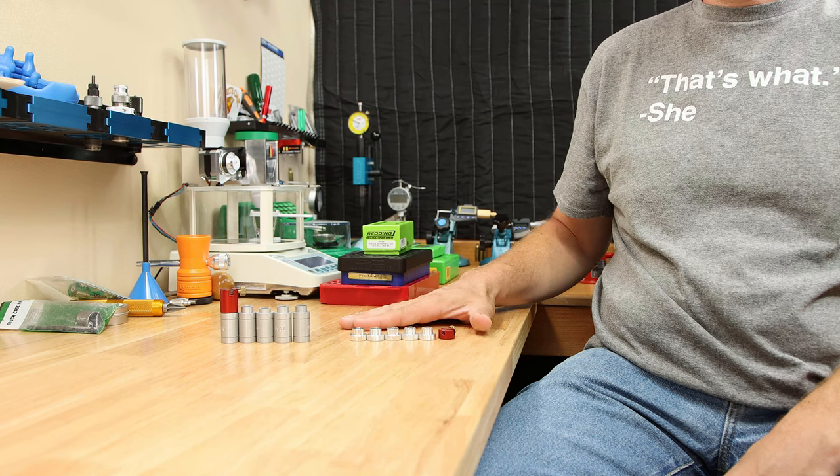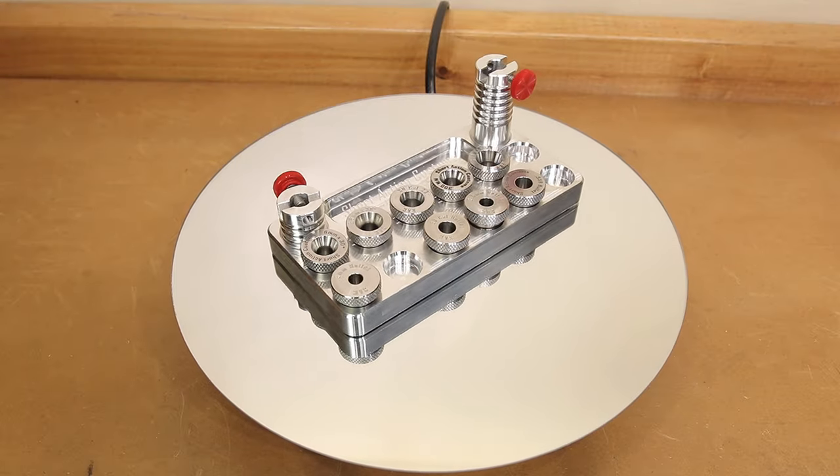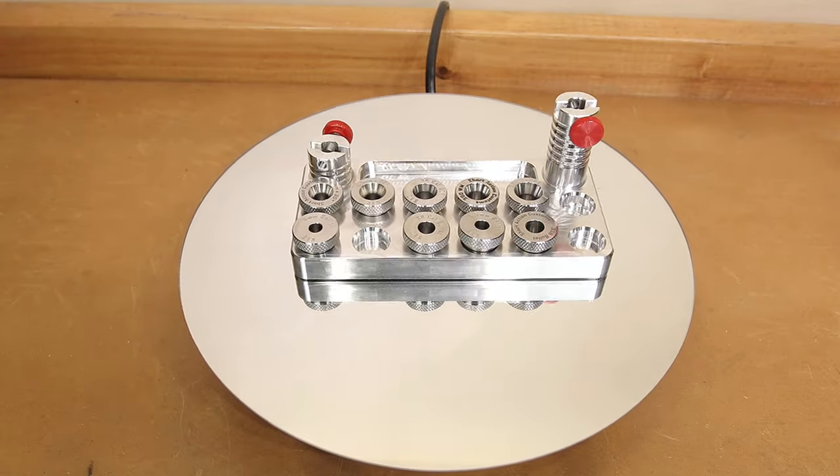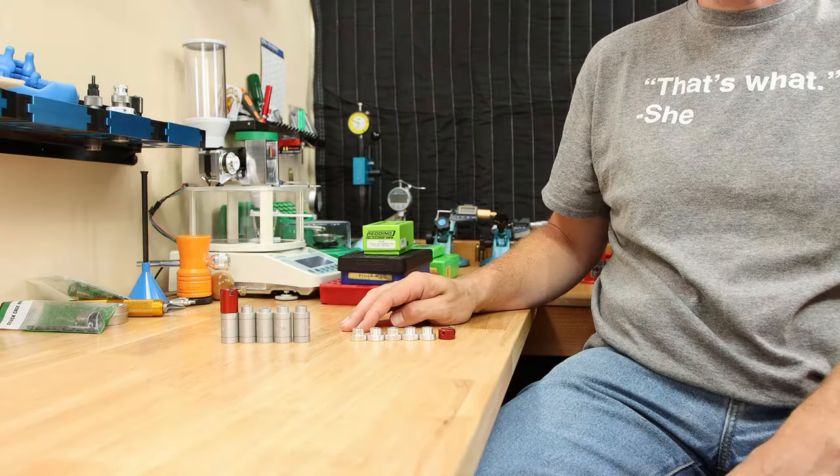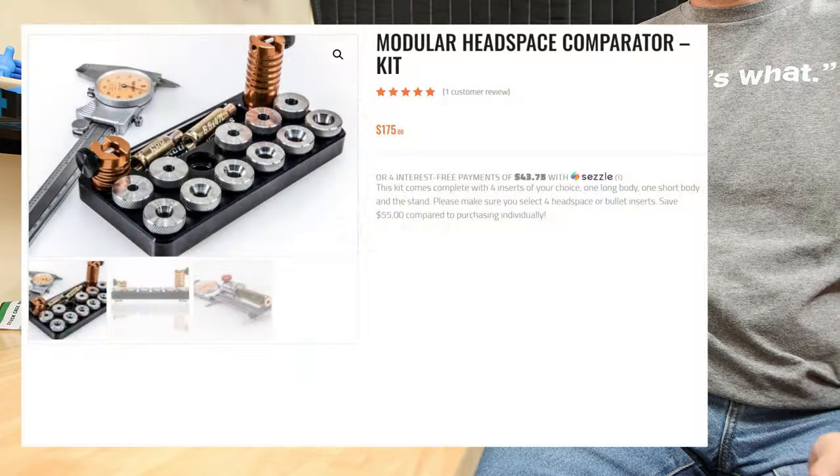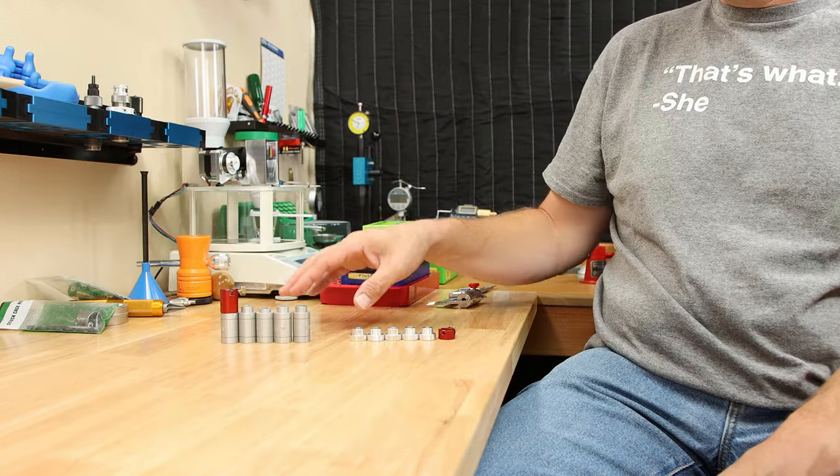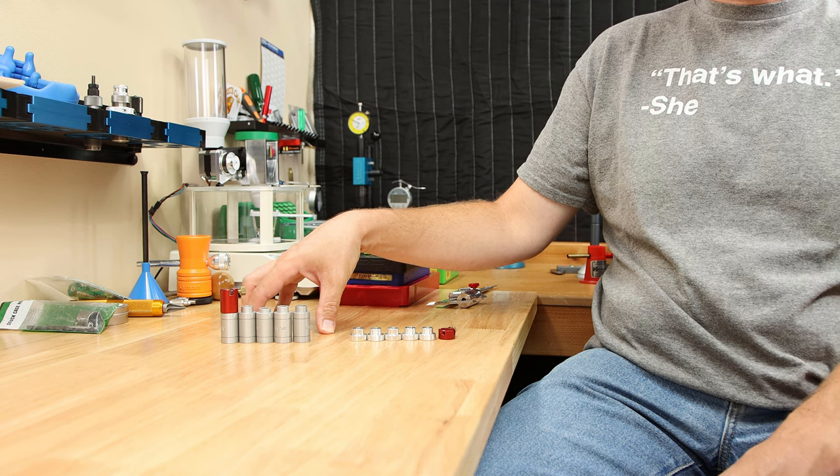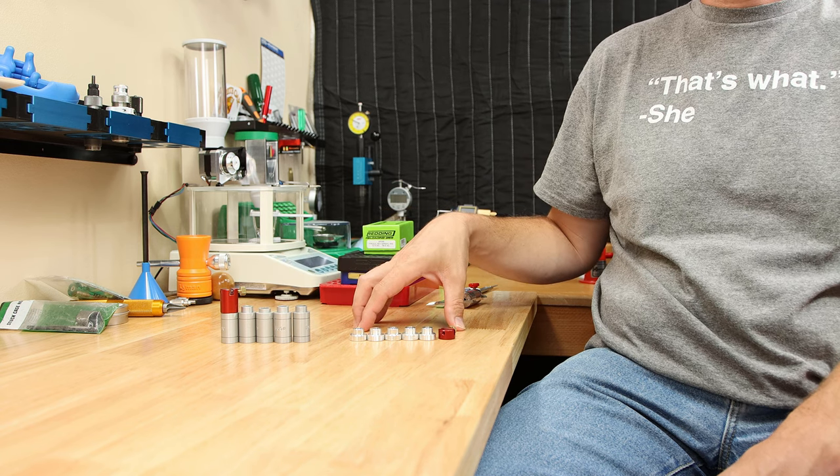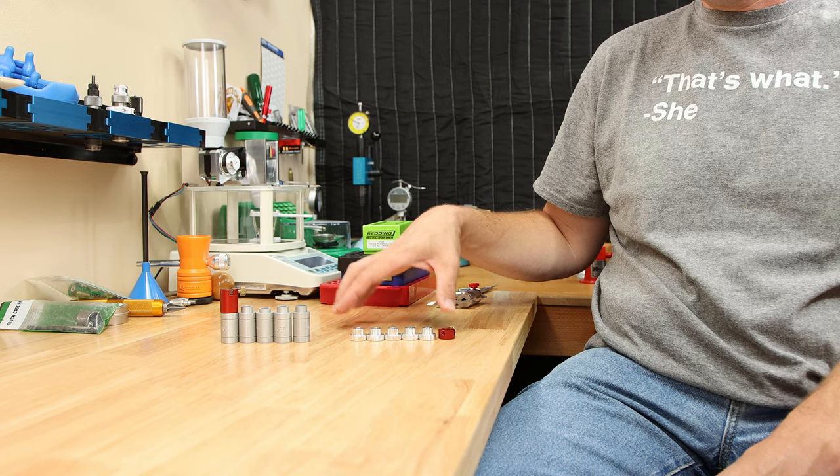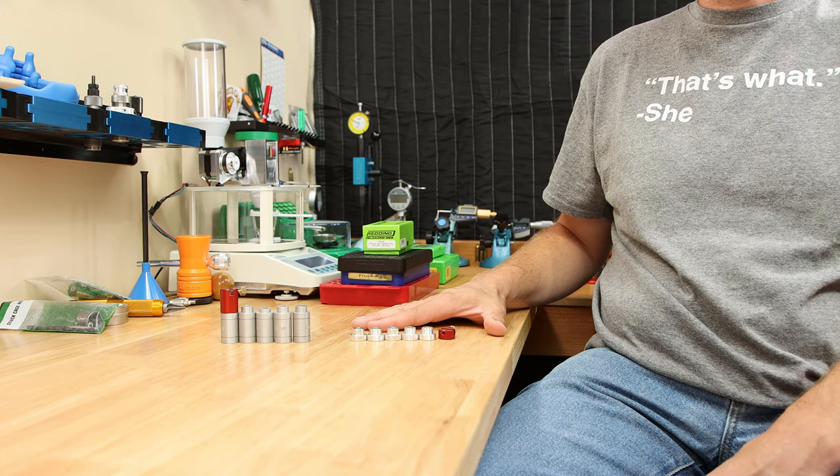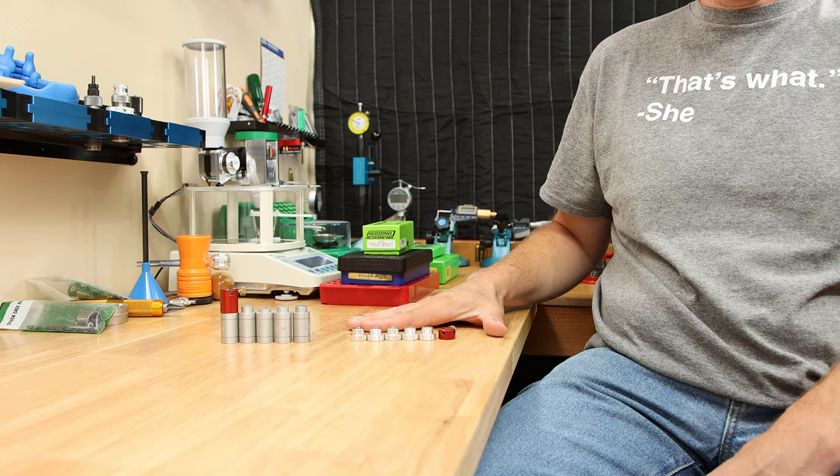If money is no object, Short Action Customs sells a wonderful comparator set where you can customize it depending on your calibers that you're interested in, but I believe that starts off right now somewhere around $175. So if you've got the dough, you won't be disappointed, but being able to set up your dies correctly is very important. Being able to consistently set your projectile length is very important as well. If you don't have the dough for the Short Action Customs kit, these are certainly better than nothing.